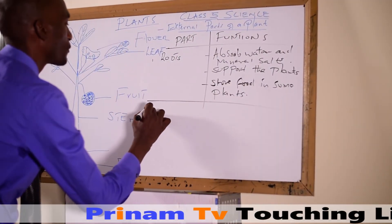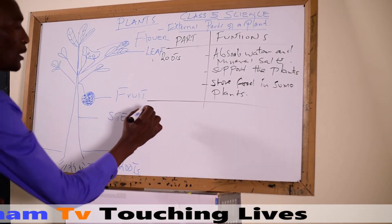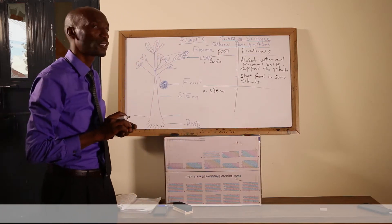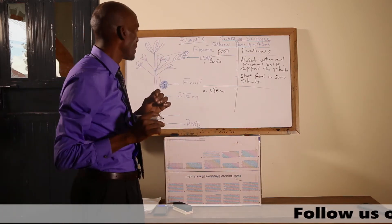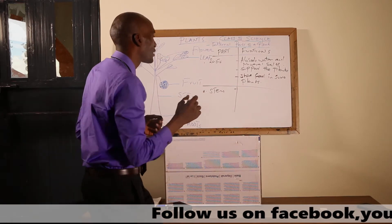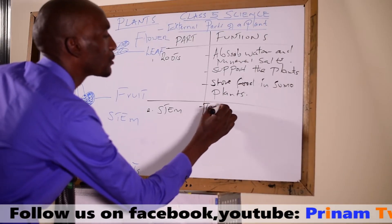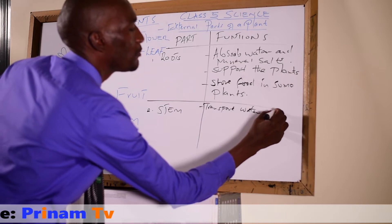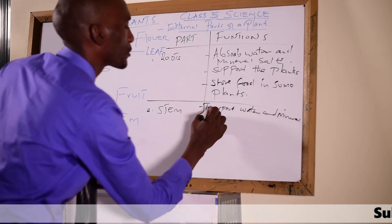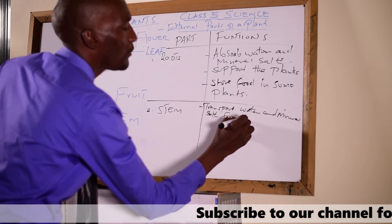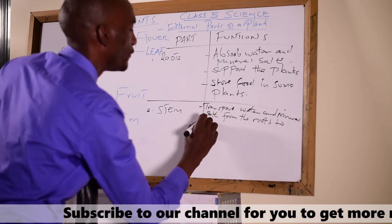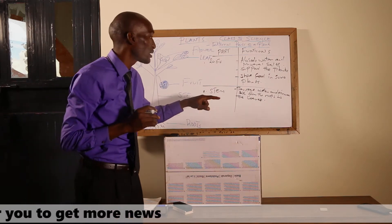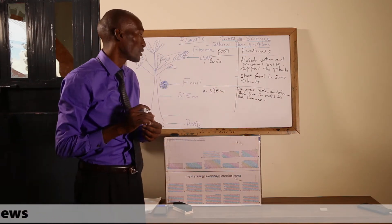Then we move to number two — we have the stem. The stem has its own functions. One of the major functions of the stem is to transport. It transports water and mineral salts from the roots to the leaves. So the major work of the stem is to transport water and mineral salts from the roots to the leaves.